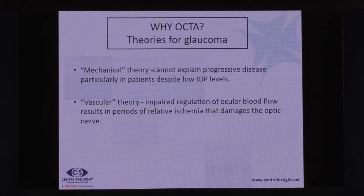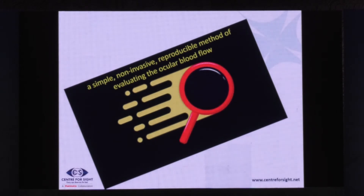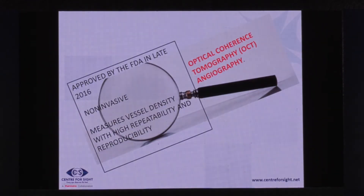So why OCTA? There are two theories about glaucoma. The first is the mechanical theory, which unfortunately cannot explain progressive disease especially in patients with low IOP. Then comes the vascular theory: impaired regulation of ocular blood flow results in periods of relative ischemia that damages the optic nerve. Can we detect these blood vessels? Can we know whether vessel density has actually reduced? The search has always been on for a simple, non-invasive, reproducible method for evaluating blood flow. This modality was approved by the FDA in late 2016, measuring vessel density with higher repeatability and reproducibility.